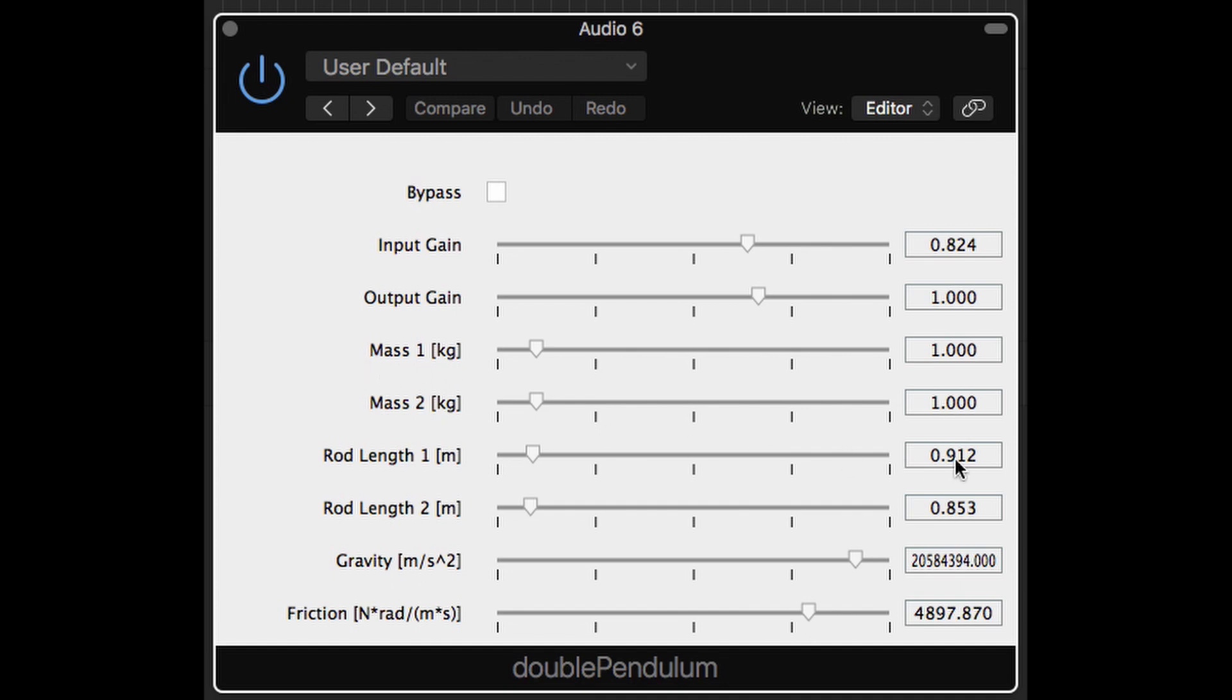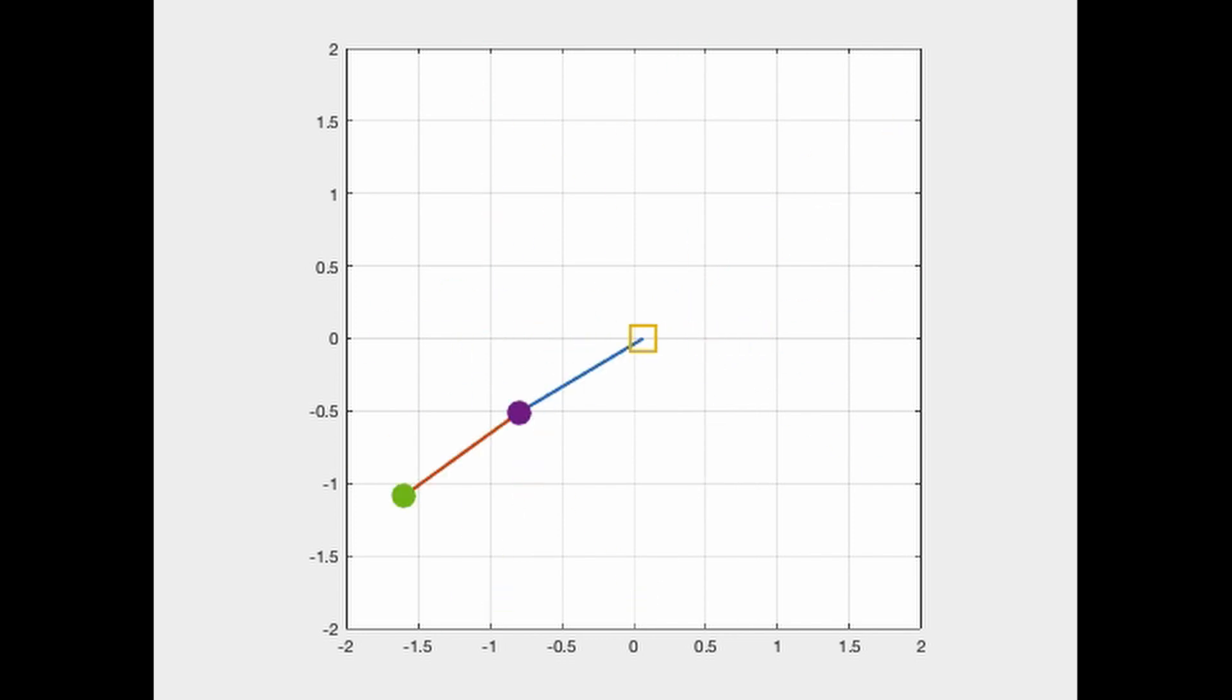Most of the time, I just keep the mass of both of the balls at one kilogram, and I keep the rod length at one meter. Actually, that's a pretty scary contraption if you think about it, especially since it's being whipped back and forth like a thousand times per second.